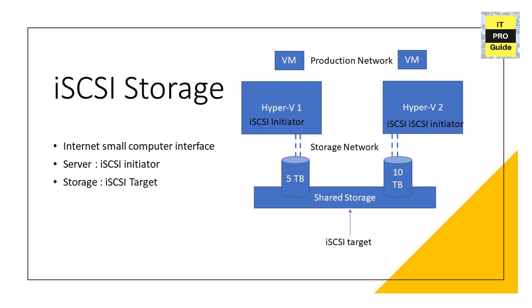iSCSI is an IP-based storage protocol. An iSCSI SAN uses an ordinary network to transport block-level data between an iSCSI initiator on a server and an iSCSI target on a storage device. The one who provides the capacity is called the storage, known as the iSCSI target. The one who accepts the capacity is the server, known as the iSCSI initiator. You can use a normal Ethernet port for iSCSI communication — no special port is required.